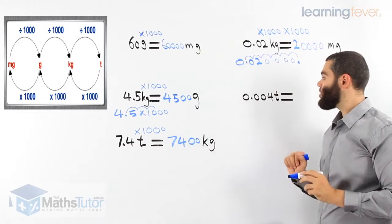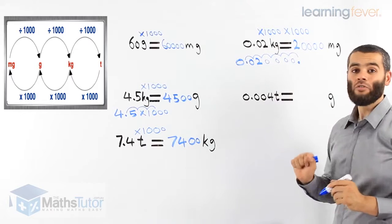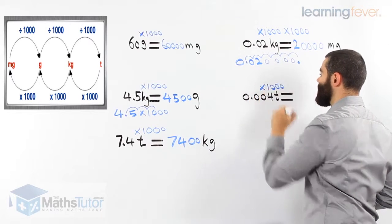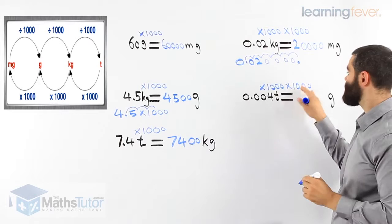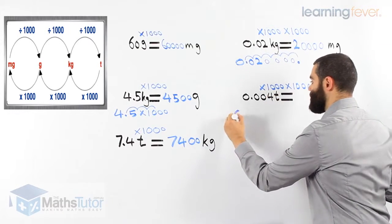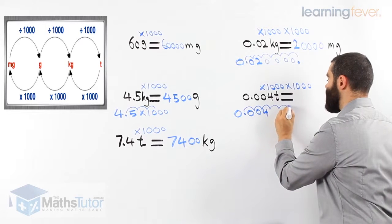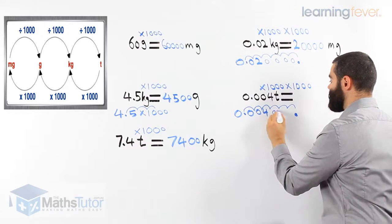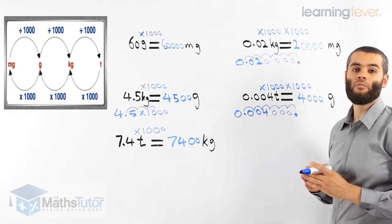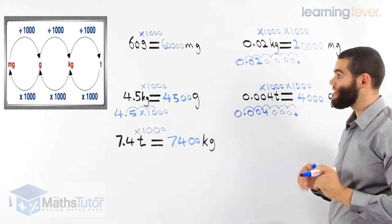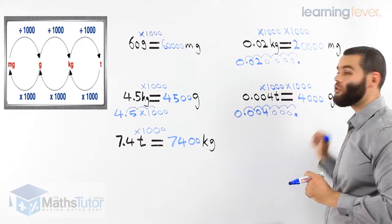One more. Zero point zero four tons — how many grams is that? We're going from tons all the way to grams, so again two stages: tons to kilograms first, times by a thousand, and then kilograms to grams times another thousand. So once again we're multiplying by a million — six zeros. We can use our calculator or do it manually, jumping six places to the right. Four thousand grams is the same as zero point zero four tons. This is how to convert large units of mass to small units of mass.